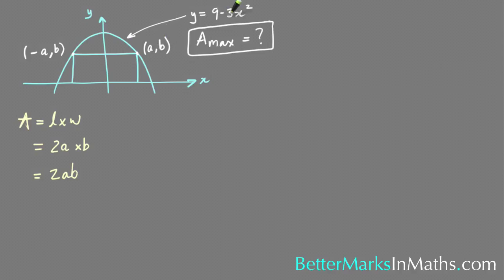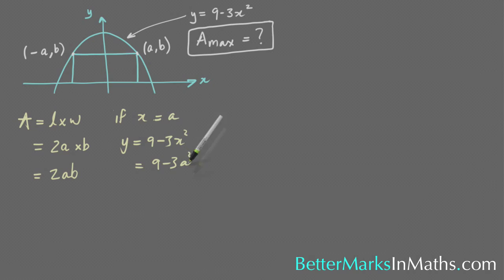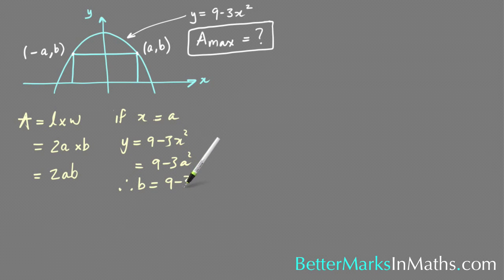If x equals a, then y is going to equal 9 minus 3x squared. So subbing x equals a, you get 9 minus 3a squared. Therefore b equals 9 minus 3a squared.